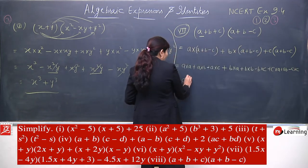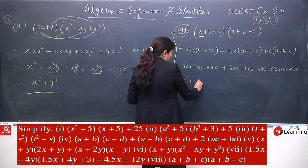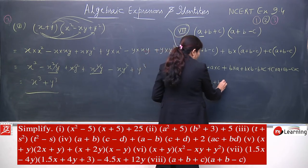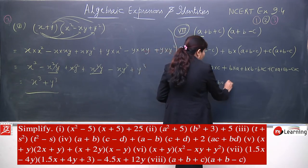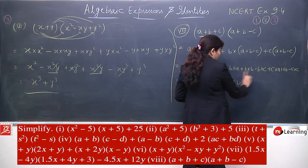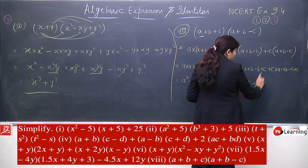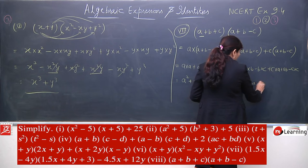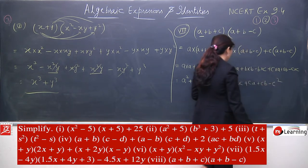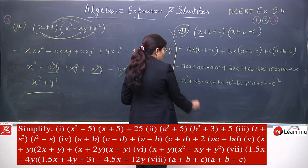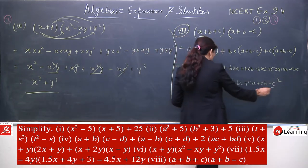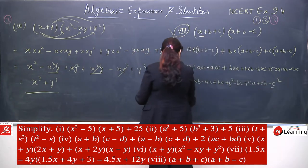Let me apply one step of distributive property. a multiplied by full second term, b multiplied by full second term, plus c multiplied by full second term. Now expand: a into a plus a into b minus a into c — first part done. b into a plus b into b minus b into c — second part done. c into a plus c into b — note the signs carefully here — c into c. We get 9 terms.